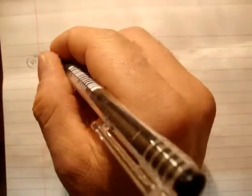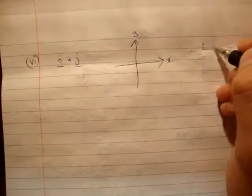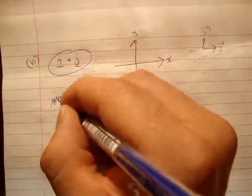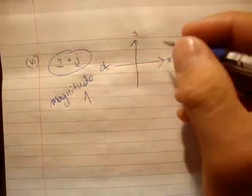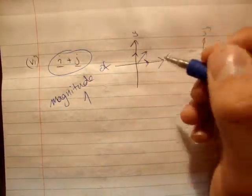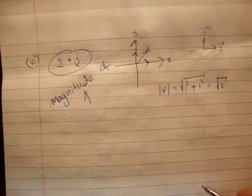Next, we're going to do part 6. This one is i hat plus j hat. Draw our Cartesian plane, our x and y axis. Draw our unit vectors i hat and j hat. A unit vector has a magnitude of 1. So both components are 1 and 1, and because it's 1 and 1, your resultant vector would be here. I'm going to call that alpha. The magnitude of alpha is the square root of 1 squared plus 1 squared, which is root 2.